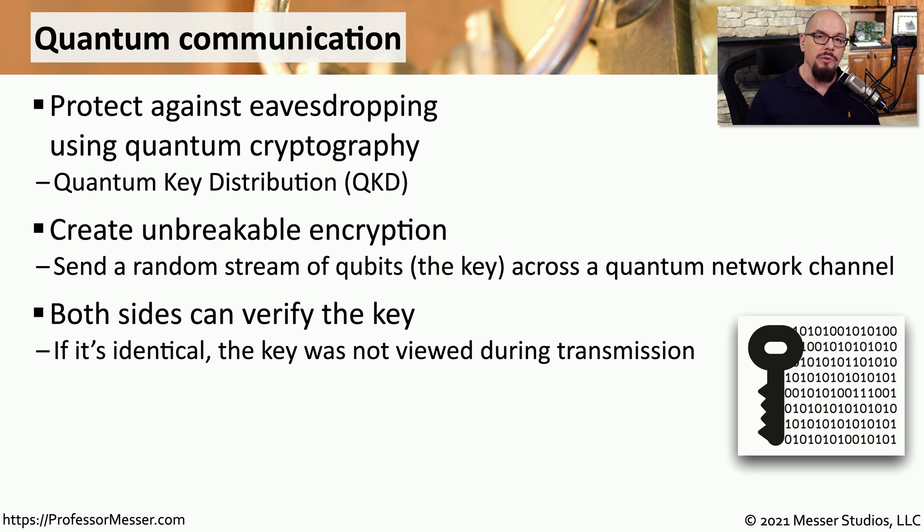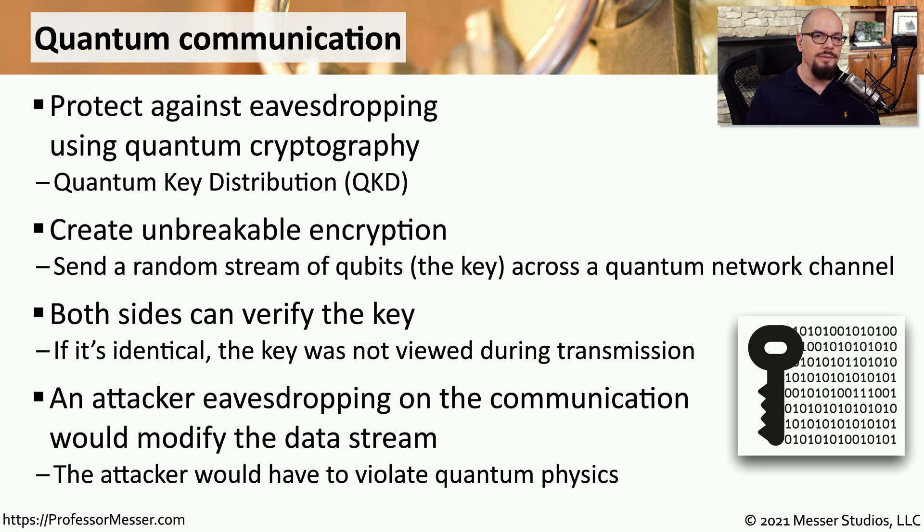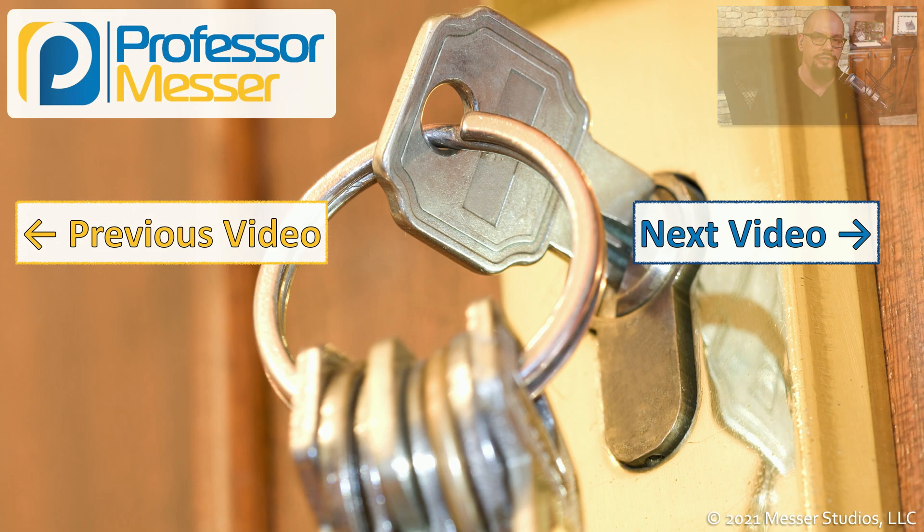Once the key is received, both sides can verify that key. And if it's identical, then no one viewed that key during the transmission process. However, if someone was to monitor that conversation, it would change the keys that were received on the other side, and those two keys would not verify. This greatly changes the processes and procedures we use for encryption, and we'll want to keep a close eye on quantum computing as this technology matures.